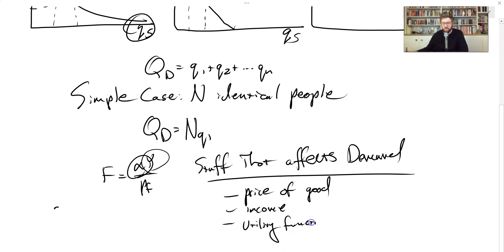So if the utility function changes, which might occur for example if advertising makes people aware of a new product or gives them new information about it and changes the value that they put on it, then that may change the utility function. All of those things can move that demand curve around. But the last one that can also do it is the price of other goods.